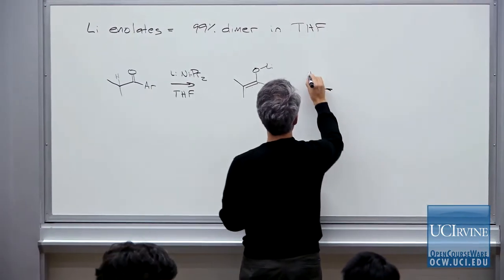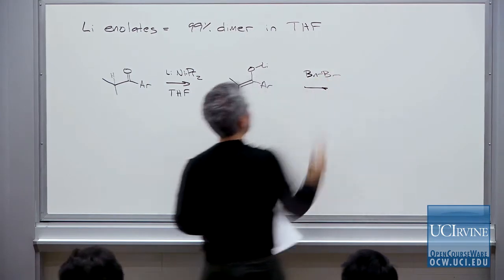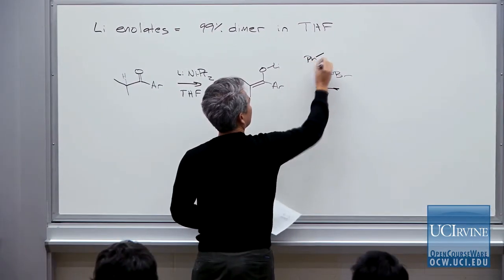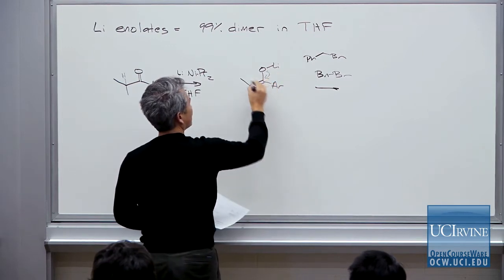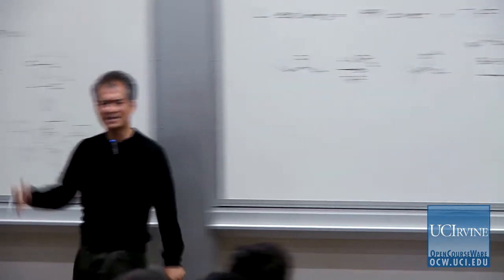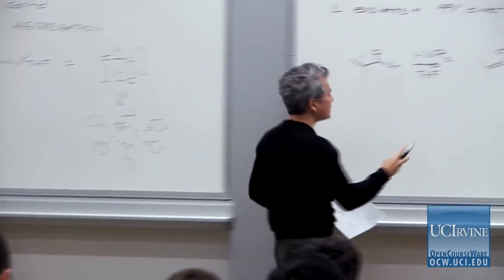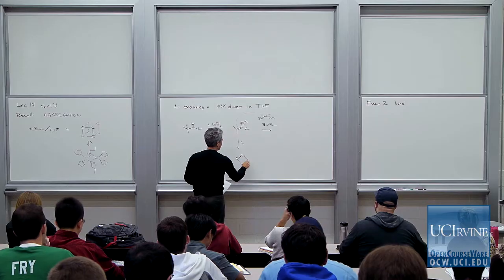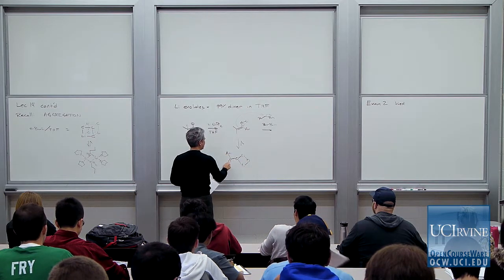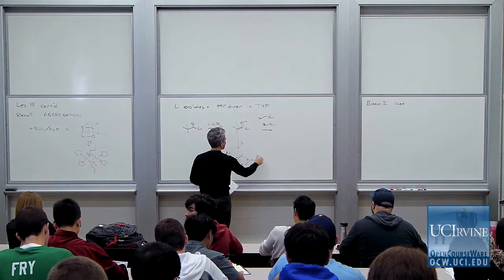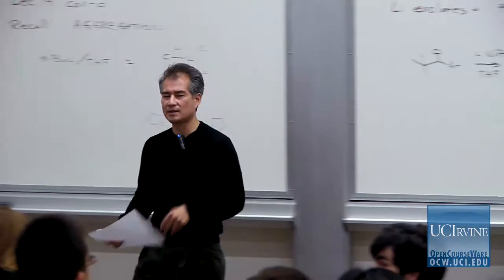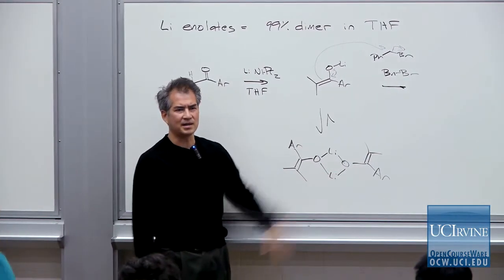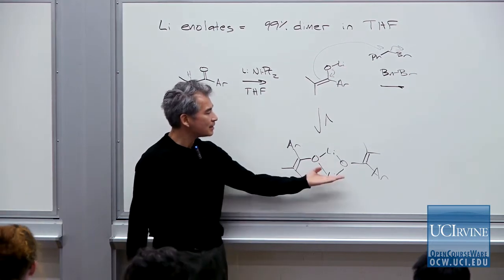If you take this and treat it with benzyl bromide to do an SN2 reaction displacing the bromide using the lithium enolate, you could draw some sort of an SN2 mechanism. How are we going to represent this lithium enolate species when it exists over 99% in solution as a dimer? If you want to really describe what this enolate looks like, you end up with something like this — I'm not going to draw the THF molecules on those lithiums. These are dative bonds because oxygen has three bonds and ought to have a positive charge.